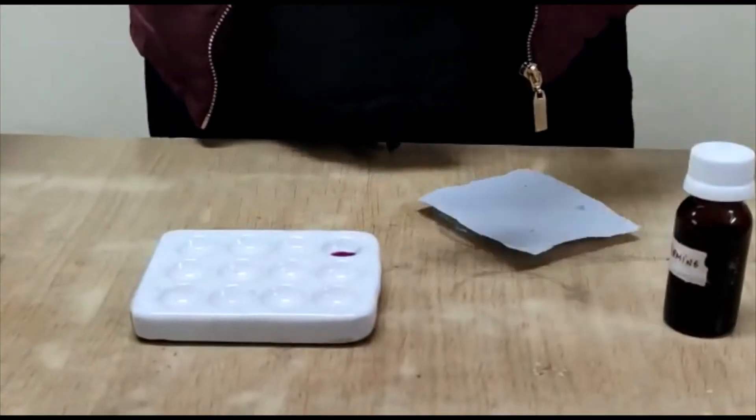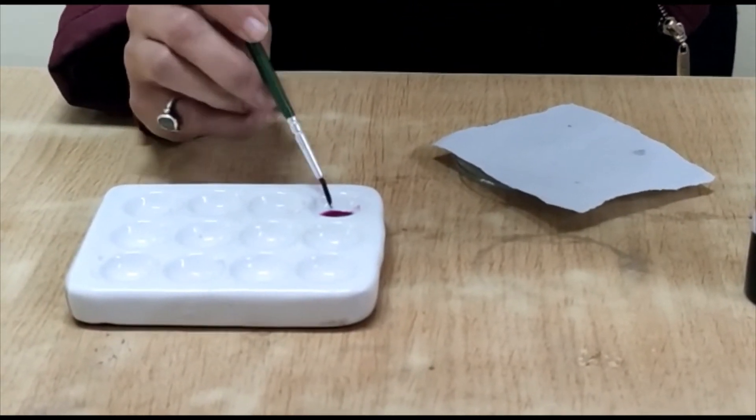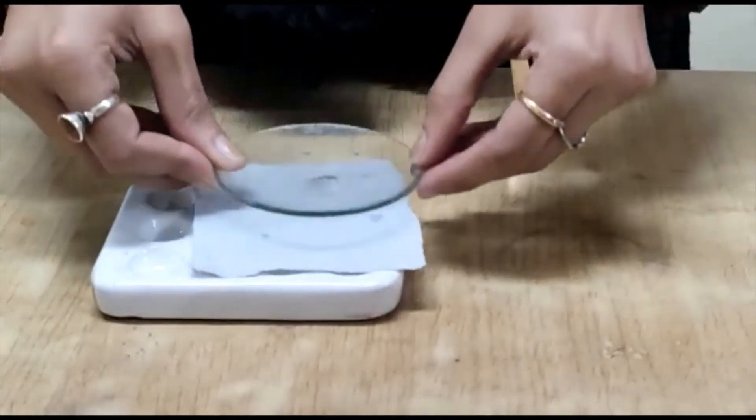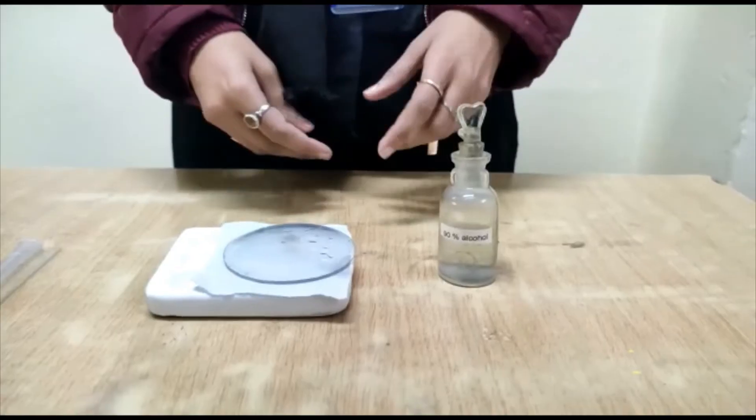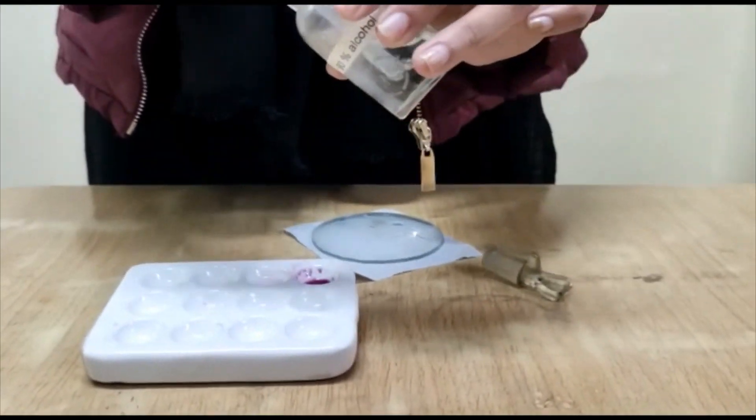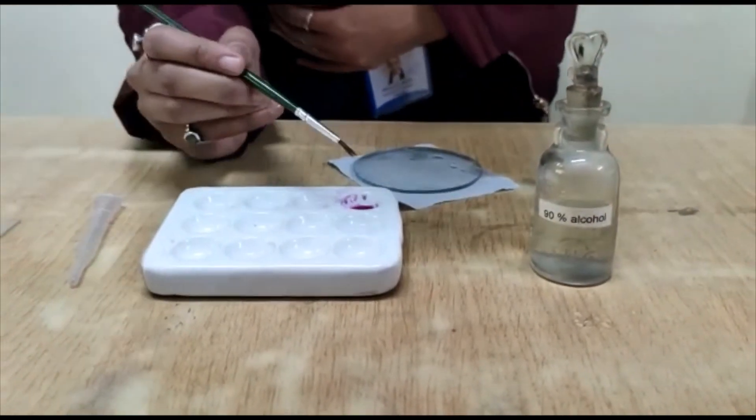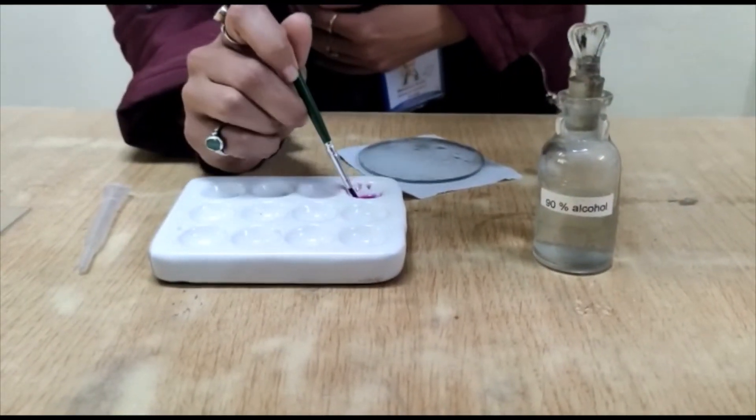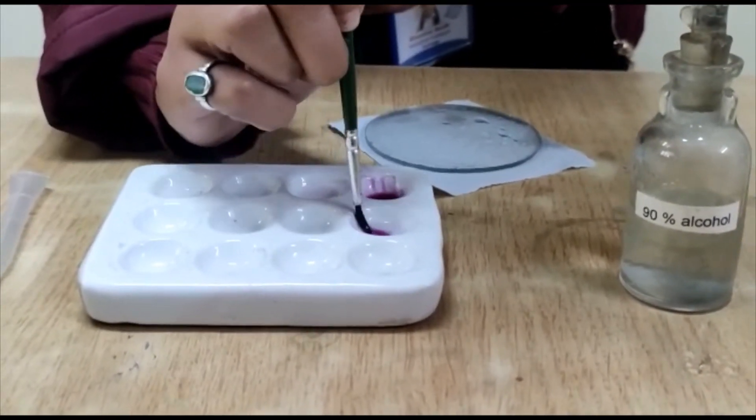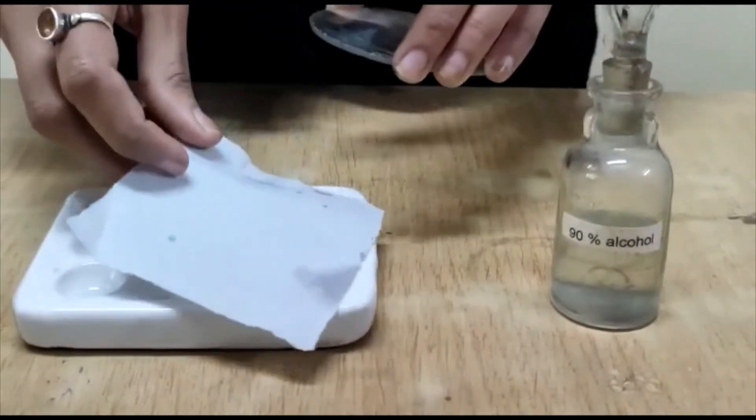Now we take 90% alcohol and transfer the gemmules into 90% alcohol. Also, here is the point where you have to check your gemmules are not overstained. Now again, cover it and wait for 5 minutes.